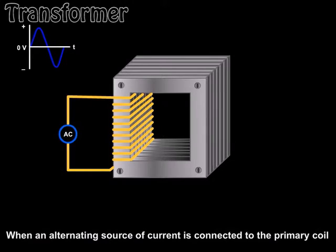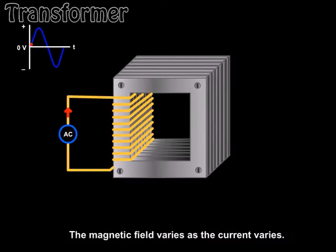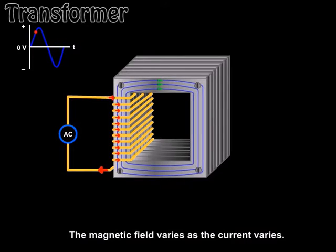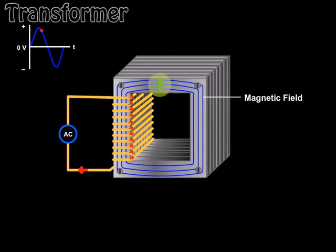When an alternating source of current is connected to the primary coil, the magnetic field varies as the current varies.